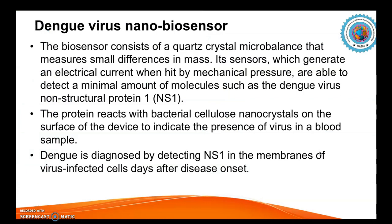One nanobiosensor developed for dengue virus uses a quartz crystal microbalance, which measures small differences in mass. Its sensors generate an electrical current when hit by mechanical pressure and are able to detect a minimal amount of molecules such as the dengue non-structural protein NS1, a marker to detect the presence of dengue virus in a sample. The protein reacts with bacterial cellulose nanocrystals on the surface of the device to indicate the presence of virus in a blood sample. Dengue is diagnosed by detecting NS1 in the membranes of virus-infected cells days after disease onset.